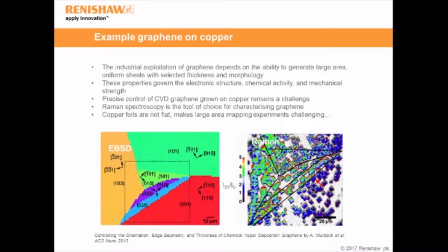Here we are looking at how the underlying copper orientation affects the thickness of the graphene flakes grown on top. The left image is an electron backscatter diffraction image, and it covers a much larger area than the Raman image — simply because we were only able to maintain focus over a limited area in the Raman image. Beyond that, we go out of focus and that affects our results. However, with LiveTrack I would have been able to do the whole image.